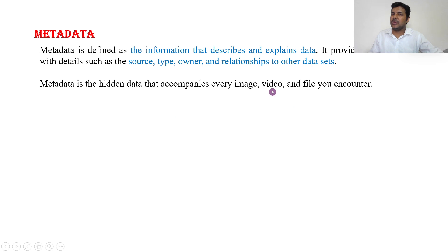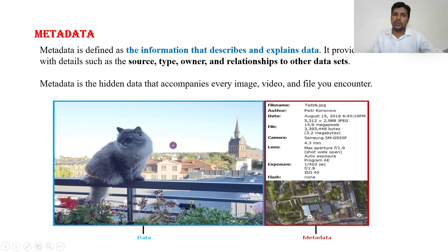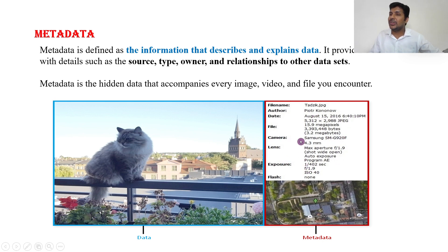Metadata provides details such as source, type, owner, and relationships. For example, when you watch a video you watch the content, but you don't usually see the format (MP4 or other), or how much storage it uses — those are metadata details. Another example: a picture of a cat is data. The file name, date and time taken, storage size, camera used, and lens details — all come under metadata.